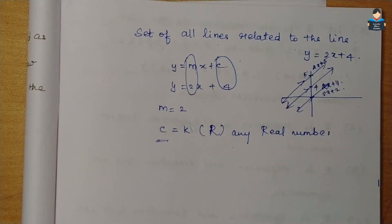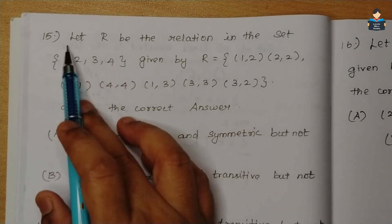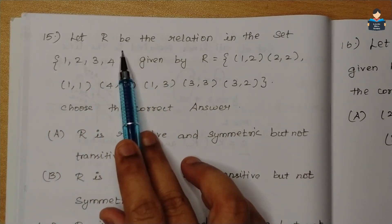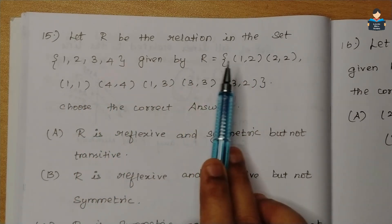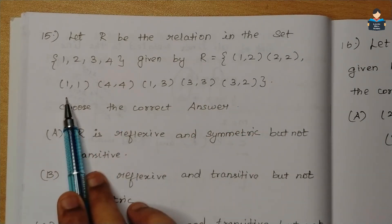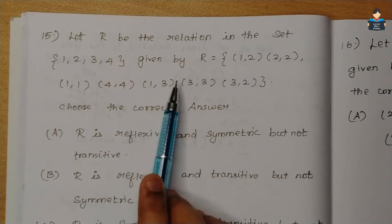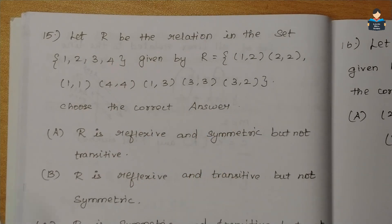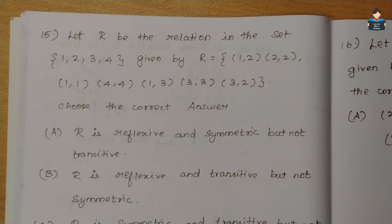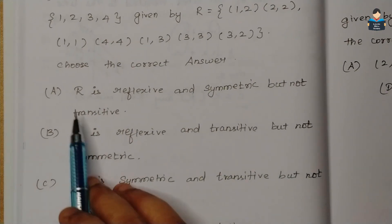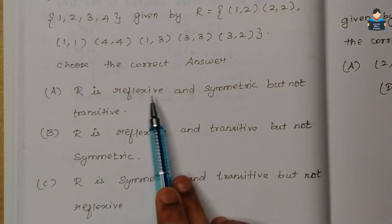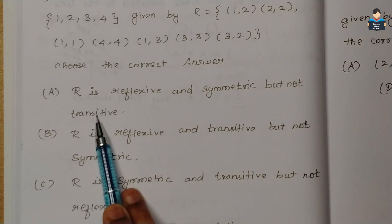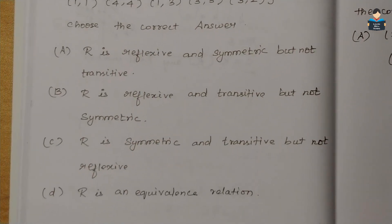Next, the 15th question. Let R be the relation in the set {1, 2, 3, 4} given as R = {(1,2), (2,2), (1,1), (4,4), (1,3), (3,3), (3,2)}. Choose the correct answer about whether R is reflexive, symmetric, or transitive. Let's first check the reflexive condition.